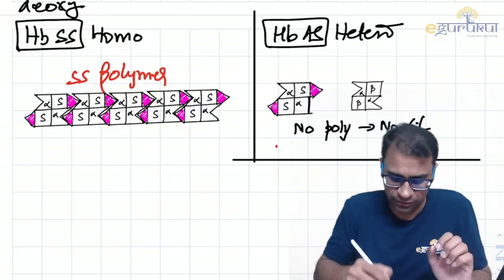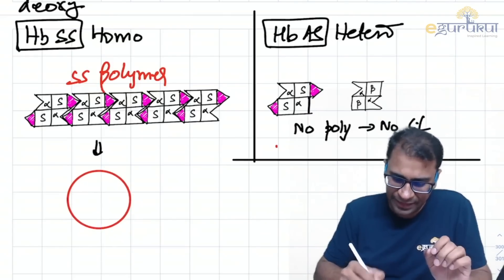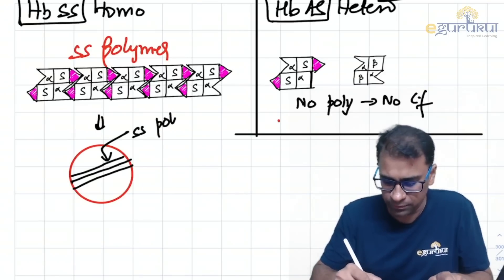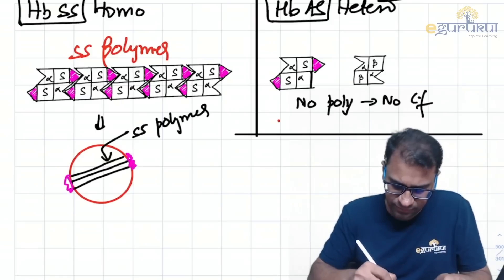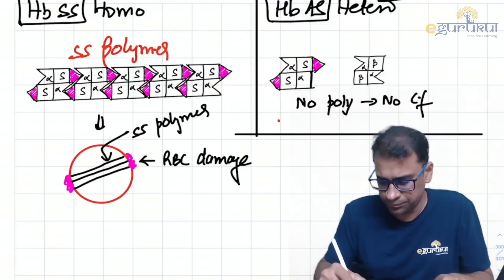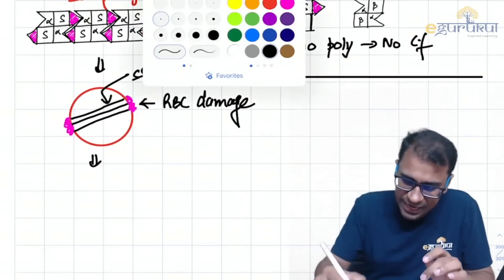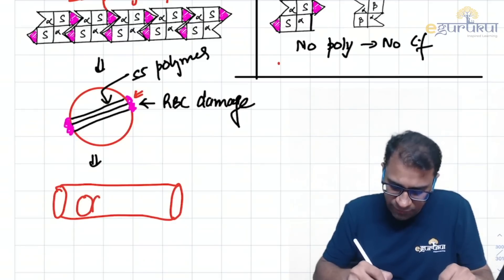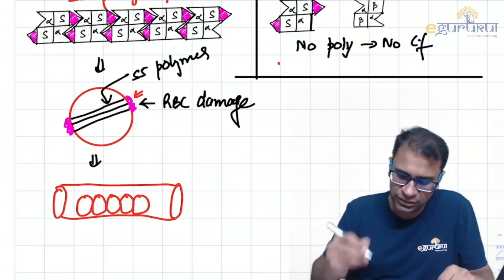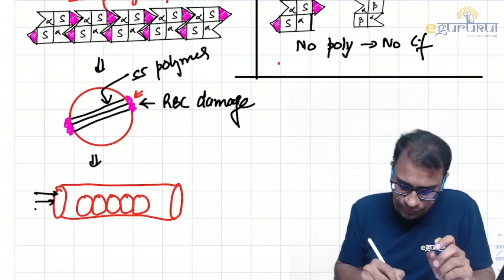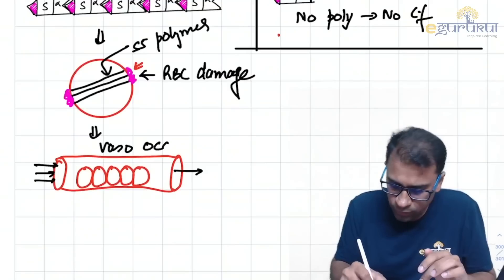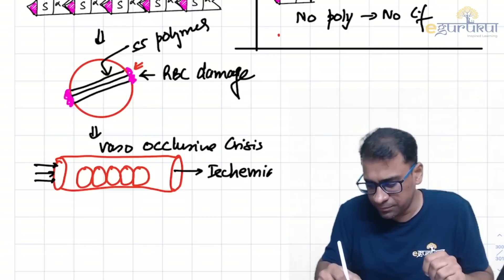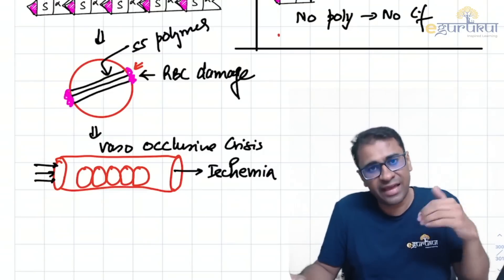In the HbSS condition, the SS polymer inside the RBC causes RBC membrane damage. Inside the vessels, all the damaged-membrane RBCs stick to each other due to phospholipid damage, reducing blood flow. This is called a vaso-occlusive crisis, and the main effect is ischemia.